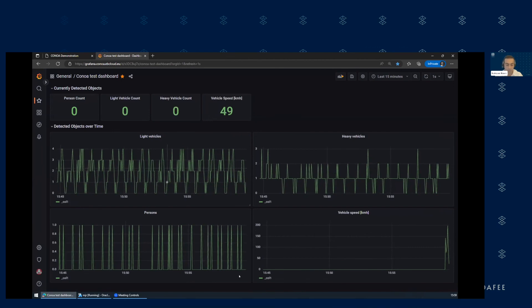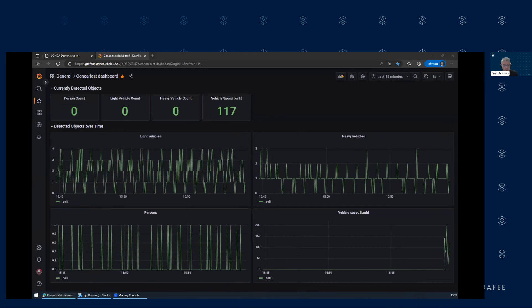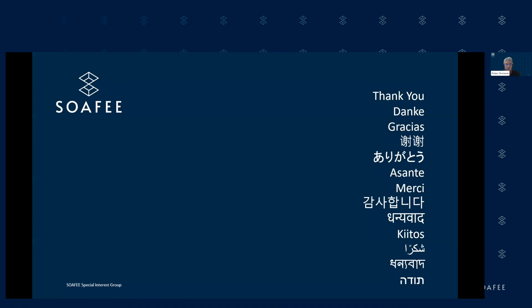Thanks a lot, Kalyan. With this, we've shown that we can perform communication between AUTOSAR Adaptive and container workloads using SOME/IP. If you have any questions, just come back to us. Thank you both — the whole topic of how we take existing workloads and bring them into these new architectures and environments is really key.